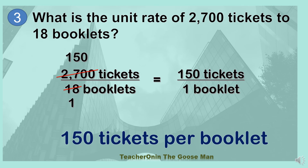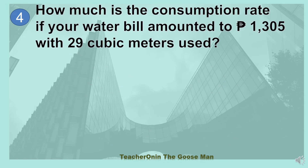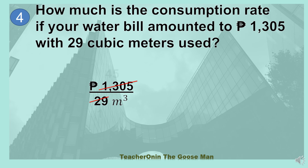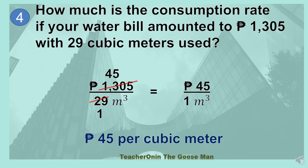Let's move on to the next example. How much is the consumption rate if your water bill amounted to 1,305 pesos with 29 cubic meters used? I'll get the ratio of 1,305 pesos all over 29 cubic meters and divide both numerator and denominator by 29. So I have 45 all over 1. In fraction form, I have 45 pesos all over 1 cubic meter, so we have 45 pesos per cubic meter.